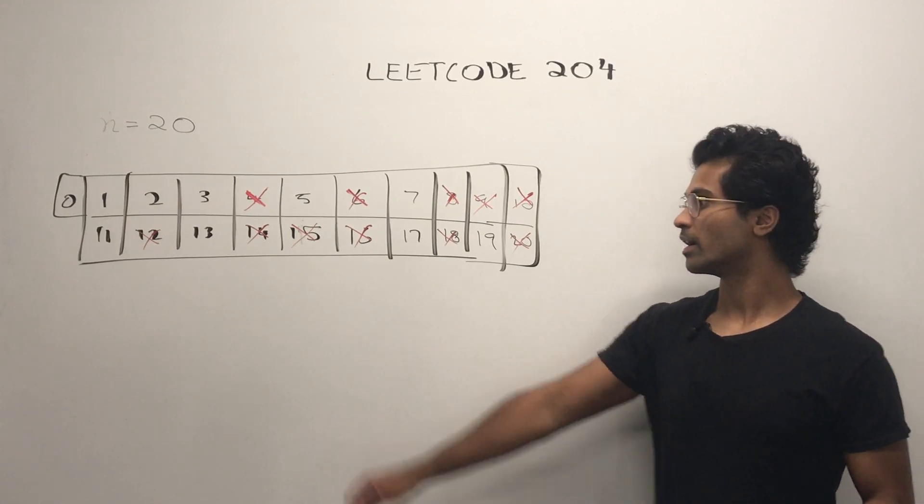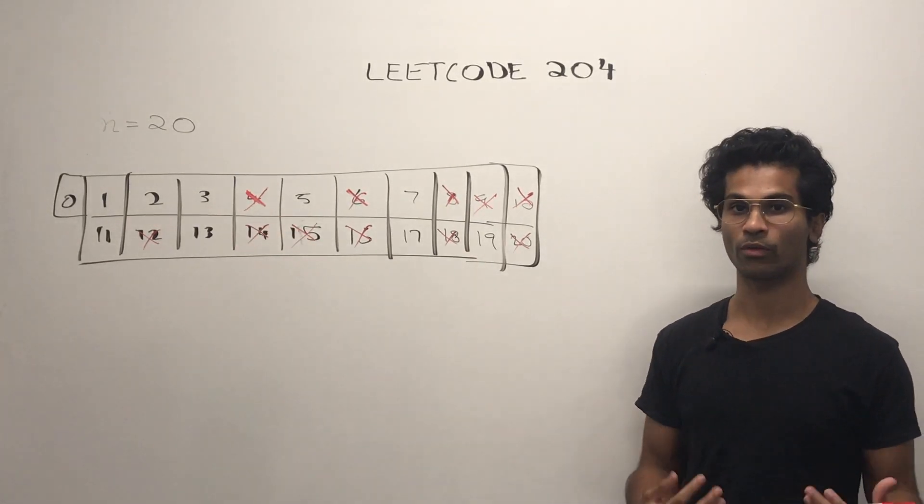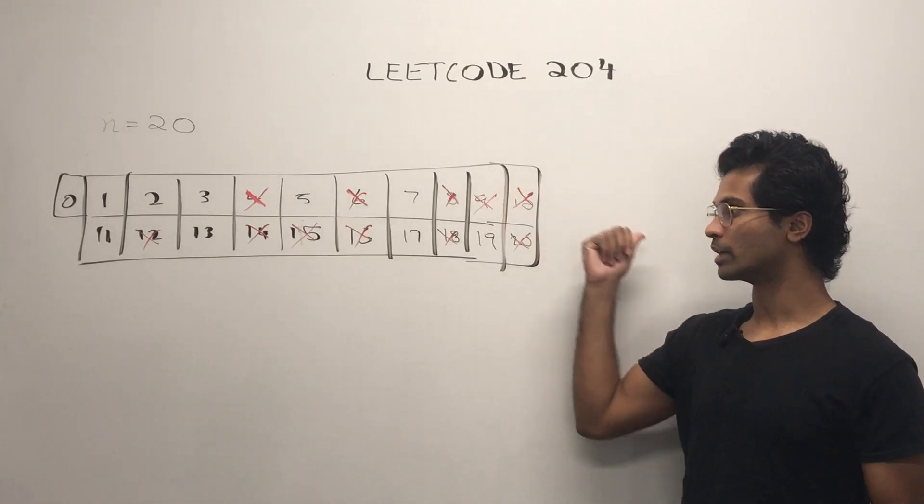Next is 4. It's already eliminated. So we go for 5 and its square. 5 squared is already larger.